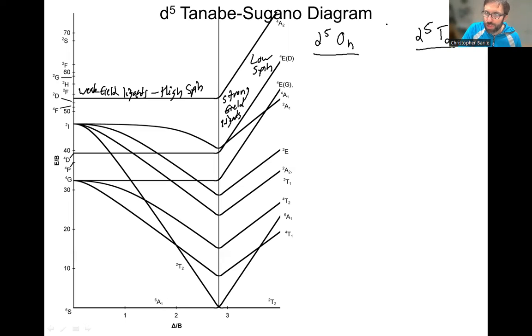For this slide, let's talk about a high spin case first. We're going to be talking about the left side of this diagram for either high spin D5 octahedral complexes or high spin D5 tetrahedral complexes. Let's first think about this ground state of sextet A1g. Why is it a sextet?